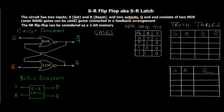Looking at the circuit diagram, we have two inputs S and R. The NOR gates are arranged such that the output of NOR gate 1 acts as one of the inputs of NOR gate 2, and the output of NOR gate 2 acts as one of the inputs of NOR gate 1. They also have their individual inputs S and R. The outputs Q and Q-bar should in most cases be complements of each other — these are the two stable outputs.